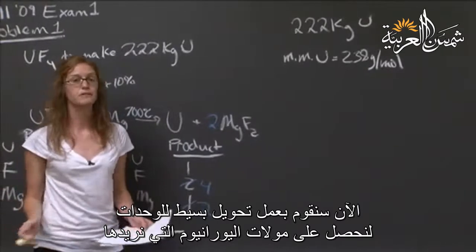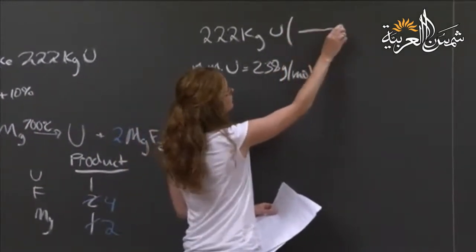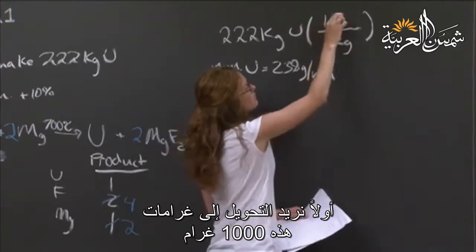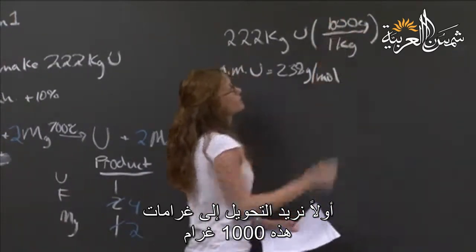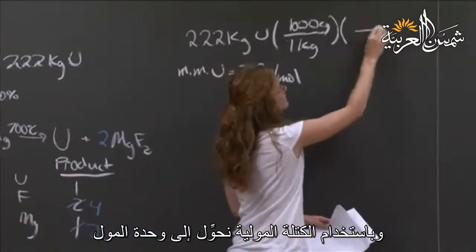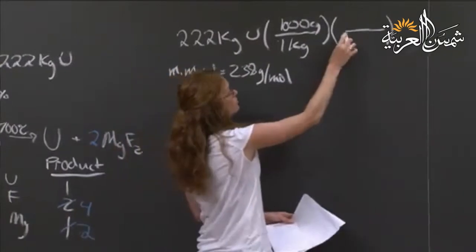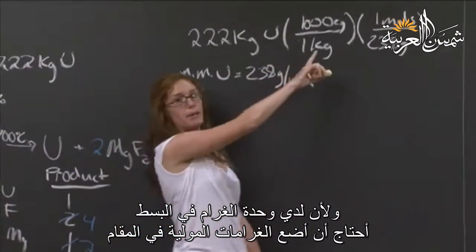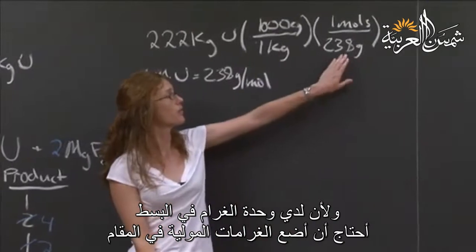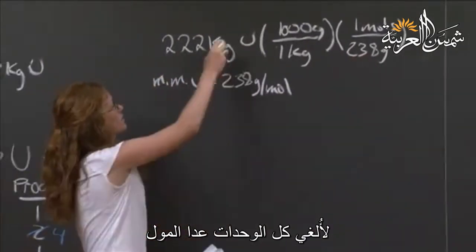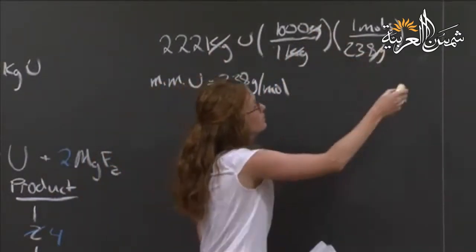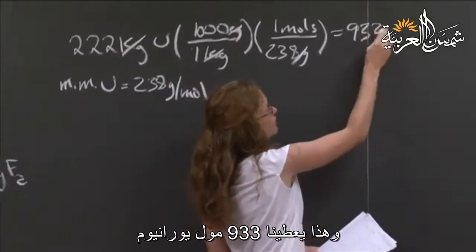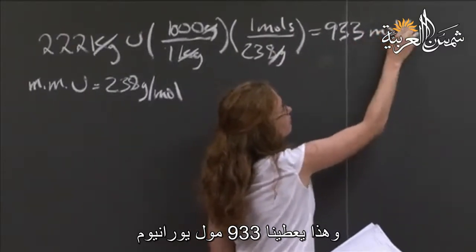We do a simple unit conversion to get the moles of uranium we want. First we convert kilograms to grams — that's 1,000 grams per kilogram — then using the molar mass of 238 grams per mole, we convert to moles. Because we have grams in the numerator, we put grams in the denominator to cancel everything out. That gives us 933 moles of uranium.